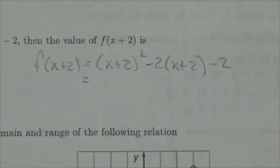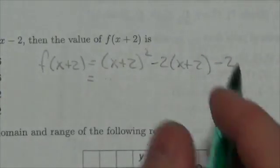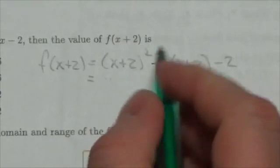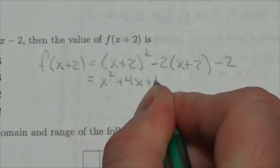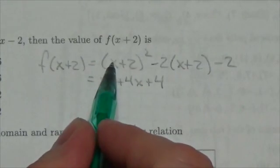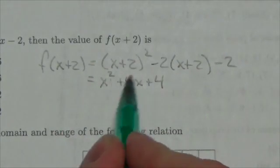So now what I've got to do is actually perform these operations and simplify it. So x plus 2 squared is going to be x squared plus 4x plus 4. Remember this is a binomial squared, so I need to have that third term.